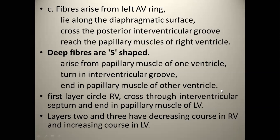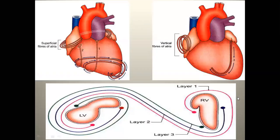One ventricle's papillary muscles arise, turn into the interventricular group, and then finally end in the other ventricle's papillary muscles. The first layer is the right ventricle circle crossing the interventricular septum to the left ventricle papillary muscles. The second layer follows a decreasing pattern in the right ventricle and an increasing course in the left ventricle. Now let's look at the image.